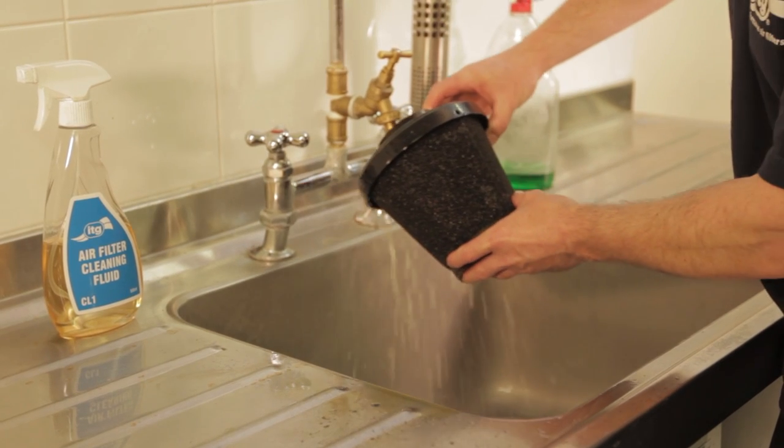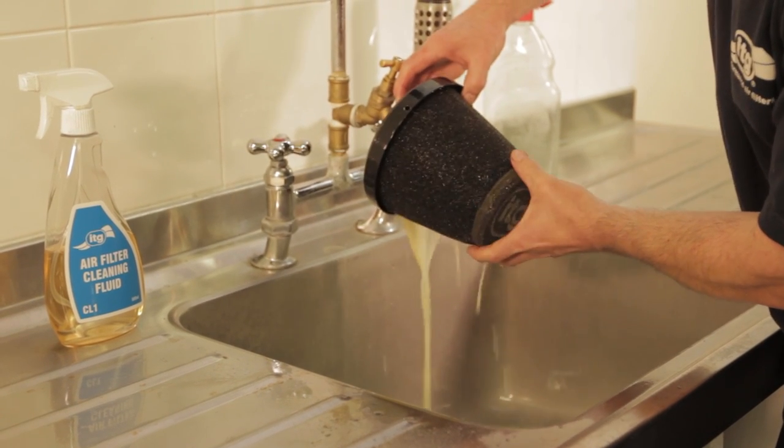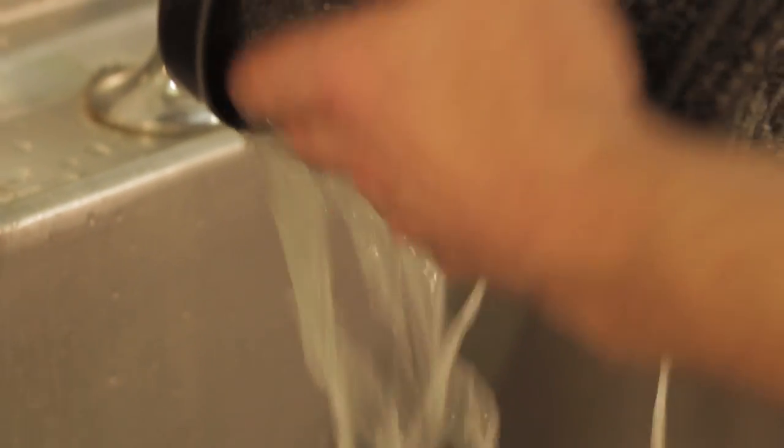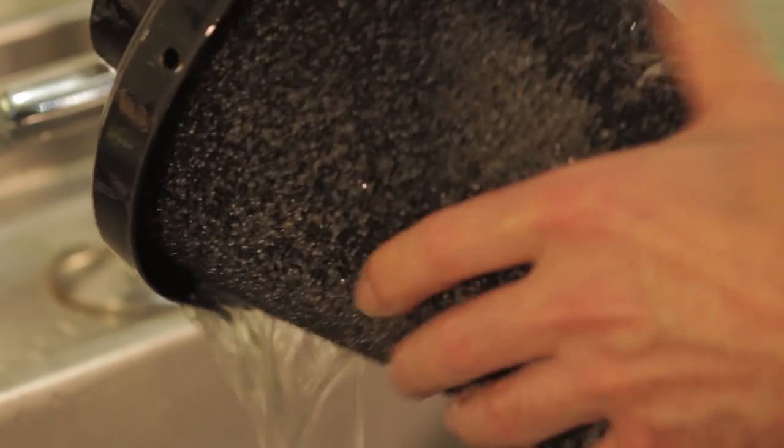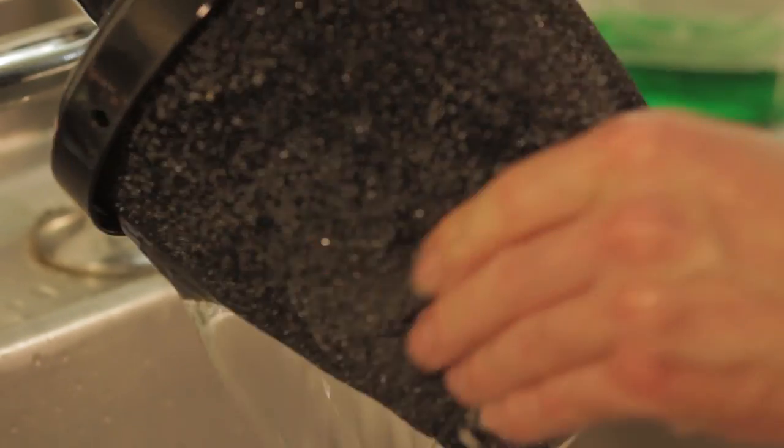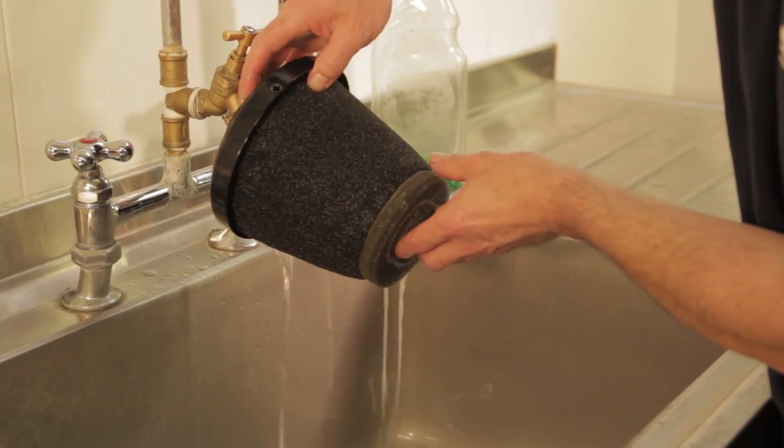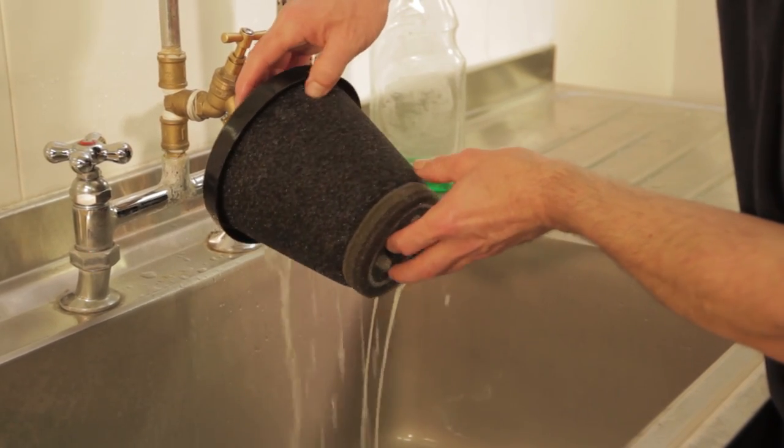Get the tap running and then just start to run the water through like that. You can just see all of the dirt and the cleaner is just coming out with it all in one go. Give it a bit of a massage and agitate it as well. That'll help to get the majority of the cleaner out.